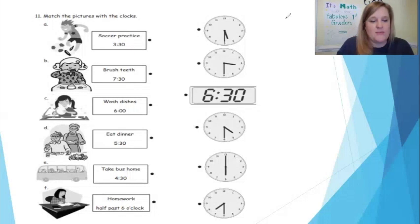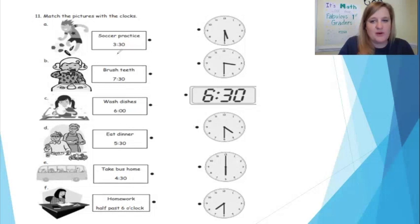Beside A, we have someone who's playing soccer. Soccer practice is at 3:30. So what you're going to do is look at the first column — remember, a column goes up and down — and you're matching it with either the digital or the analog clock in the next column. So 3:30, I have to find the clock that reads 3:30.